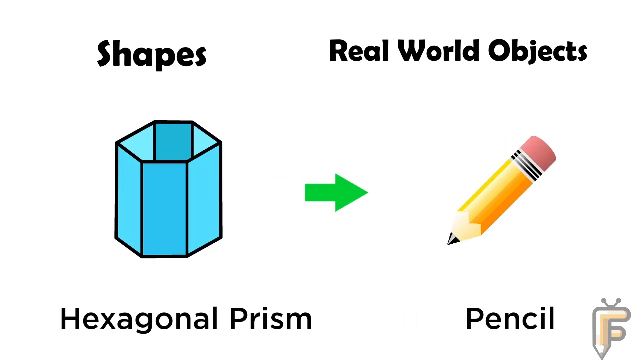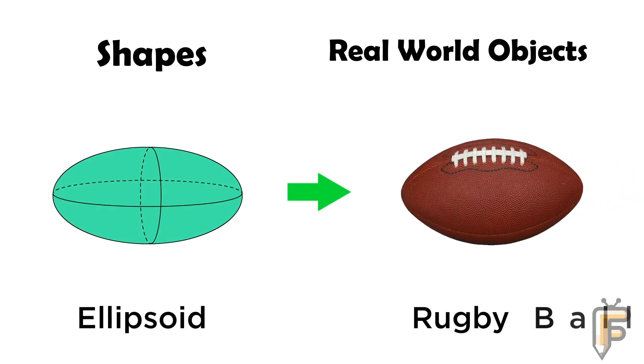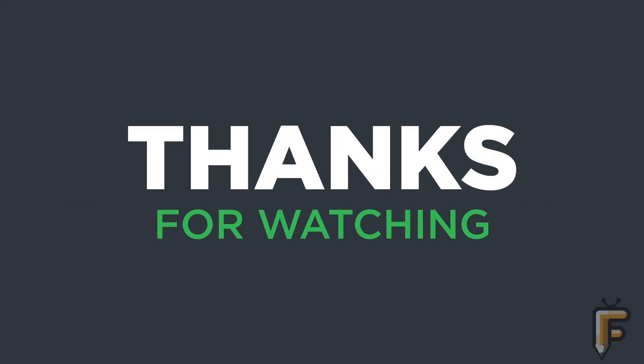Hexagonal prism: pencil is hexagonal prism shape. Ellipsoid: rugby ball is ellipsoid shape. Thanks for watching.